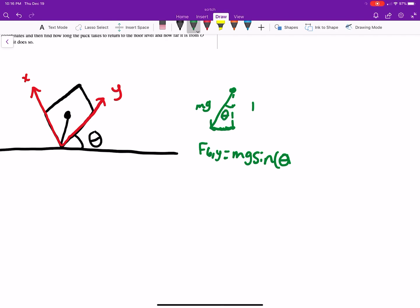Because this is our theta here, and the force due to gravity in the x direction is going to be mg cosine theta.